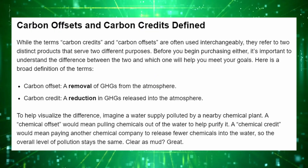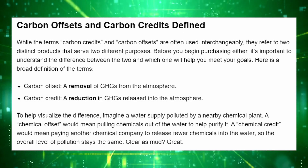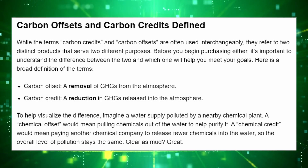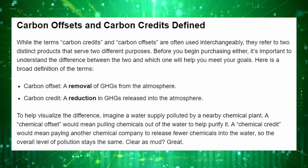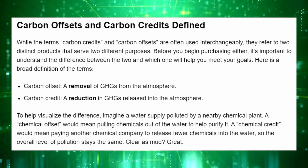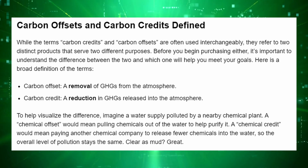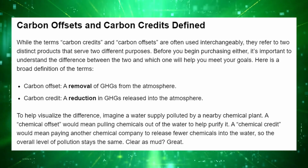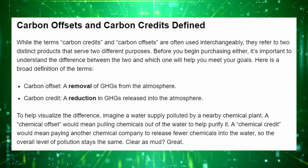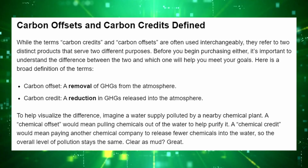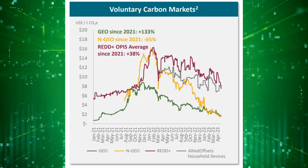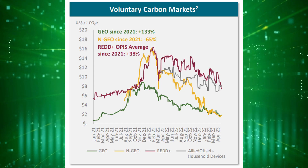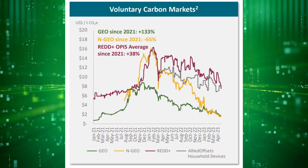The first factor that contributes to the price of a carbon credit is actually what it represents. While the terms 'carbon credit' and 'carbon offset' are often used synonymously, there's an important distinction. A carbon credit represents one ton of carbon dioxide being reduced from total emissions in the atmosphere, whereas a carbon offset refers to one ton of carbon dioxide being removed from the atmosphere through sequestration. Offsets tend to trade at a higher price since they're actually taking carbon dioxide out of the atmosphere.